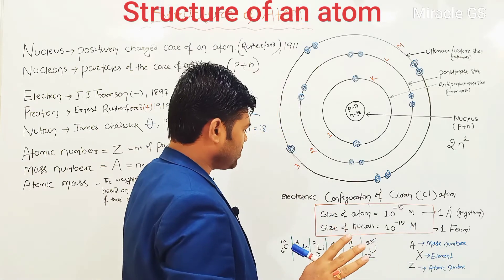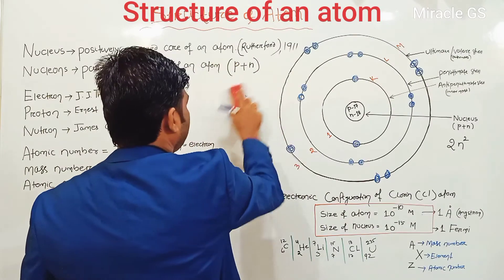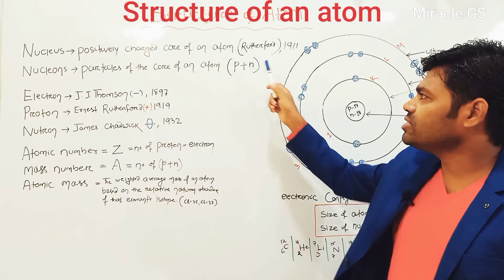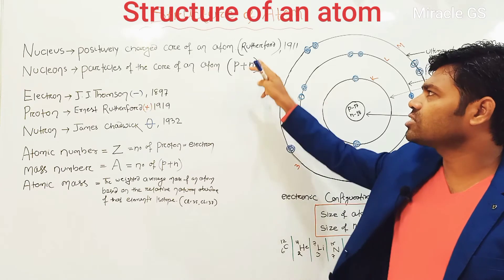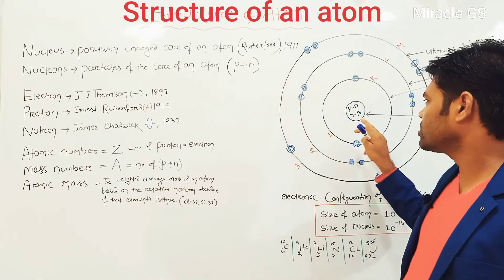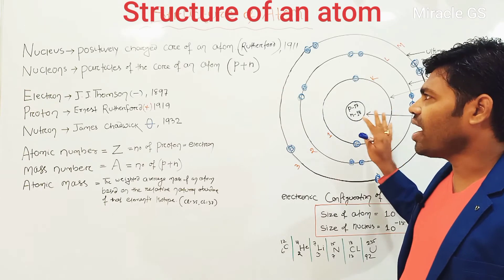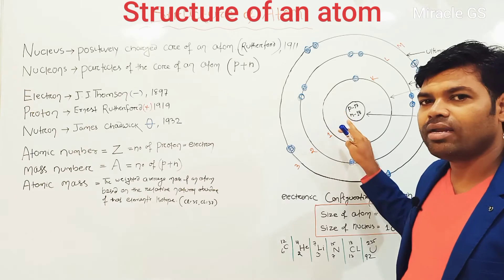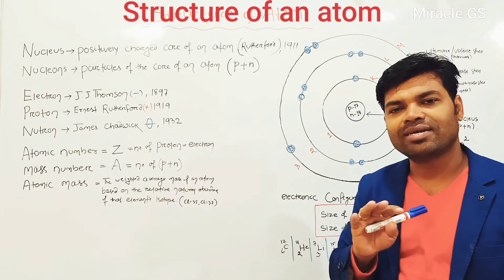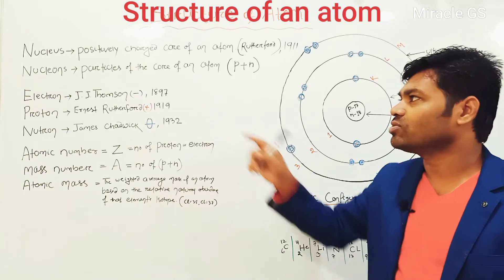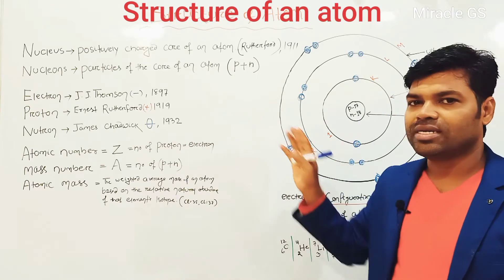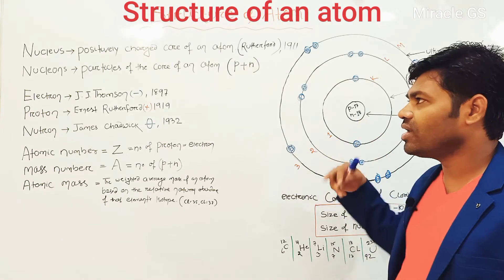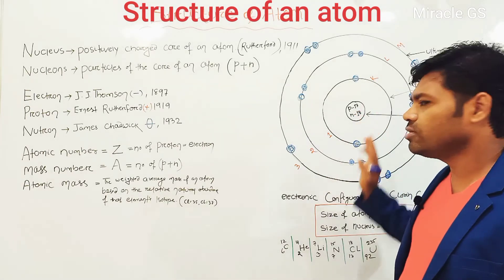These two are very important questions from your exam point of view. The nucleus was discovered by Rutherford in the year 1911. The nucleus is the positively charged core of the atom. It is positive in charge because nucleus consists of both proton and neutron — proton is positive charge, neutron is electrically neutral, so the naabhik is positive in charge. Nucleon means together proton plus neutron is called as nucleon.